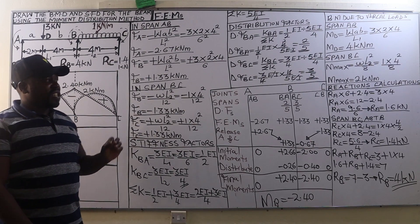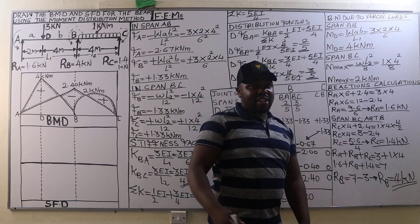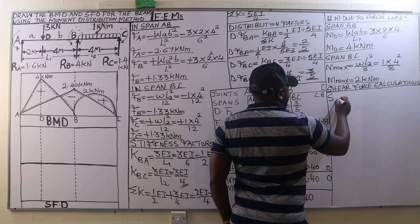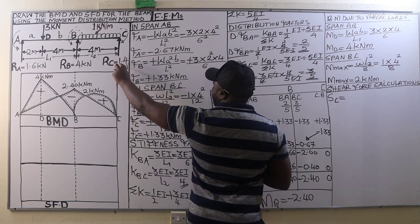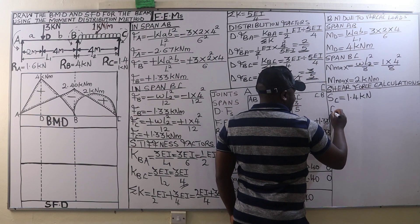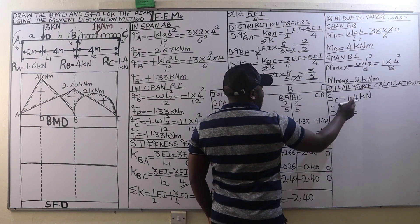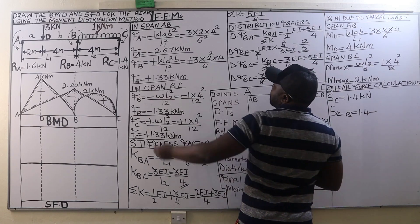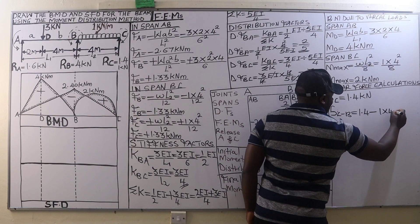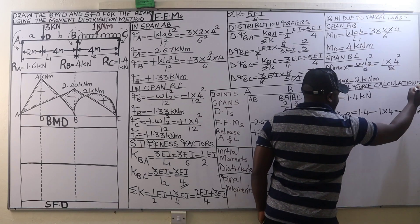The next step is to calculate the shear forces. Starting with the shear force at end C: the shear force at C equals the reaction at C, which is 1.4 kilonewtons. The shear force between C and B changes uniformly from 1.4 to 1.4 minus the UDL contribution. Between C and B we have a UDL of 1 kilonewton per meter times 4 meters, so 1.4 minus 4 equals negative 2.6 kilonewtons.